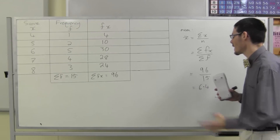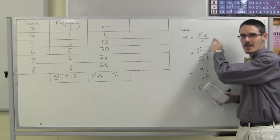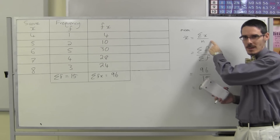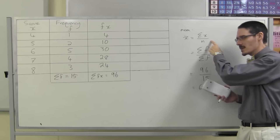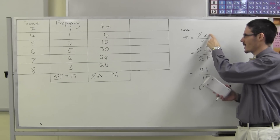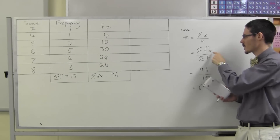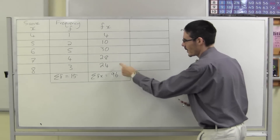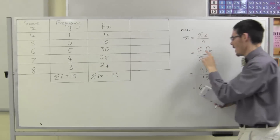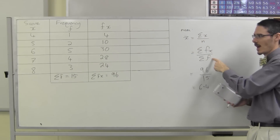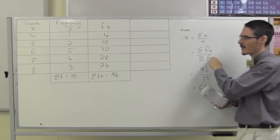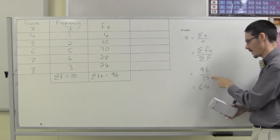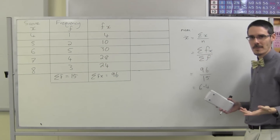So for the mean, the formula is sum of the scores divided by number of the scores. We're still doing that, but to find the sum of the scores we multiply frequency by score, and to find the number of scores we add the frequencies. That's the mean.